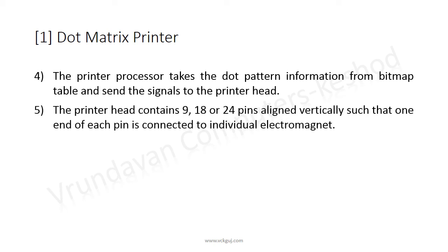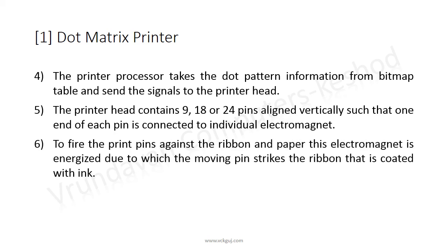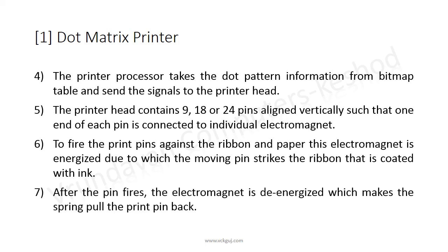The printer head contains 9, 18, or 24 pins aligned vertically, such that one end of each pin is connected to an individual electromagnet. To fire the print pins against the ribbon and paper, the electromagnet is energized, causing the moving pins to strike the ribbon coated with ink. After the pin fires, the electromagnet is de-energized, which makes the spring pull the print pins back.